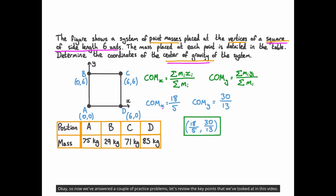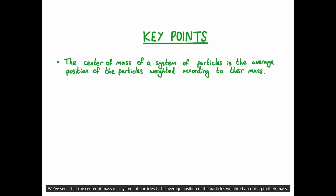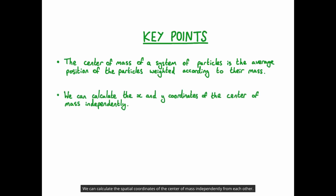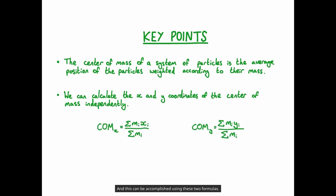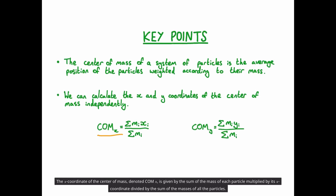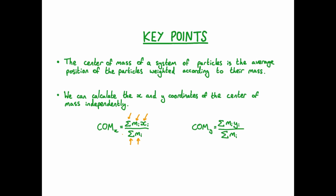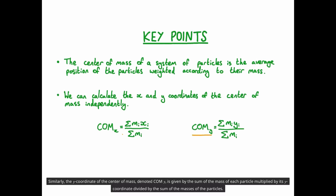Now that we've answered a couple of practice problems, let's review the key points from this video. The centre of mass of a system of particles is the average position of the particles weighted according to their mass. We can calculate the spatial coordinates of the centre of mass independently from each other — for a two-dimensional system, this would be the x and y coordinates. The x-coordinate of the centre of mass, denoted com_x, is given by the sum of each particle's mass multiplied by its x-coordinate, divided by the sum of the masses. Similarly, the y-coordinate, denoted com_y, is given by the sum of each particle's mass multiplied by its y-coordinate, divided by the sum of the masses of all the particles.